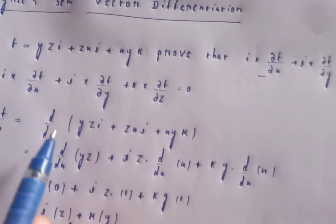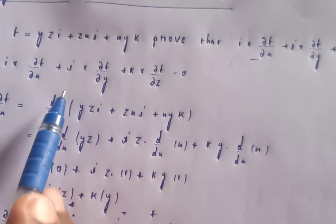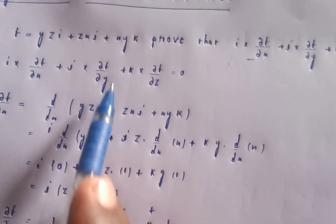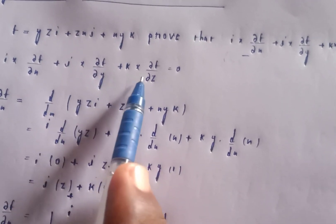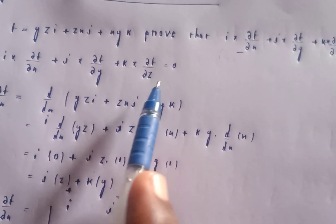Hence i cross ∂f/∂x plus j cross ∂f/∂y plus k cross ∂f/∂z is equal to zero.